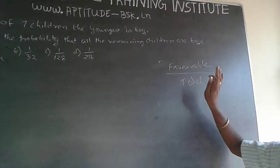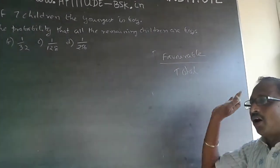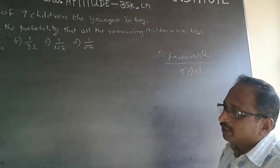So, the favorable out of total can never be more than total. So, the probability will always be less than 1.